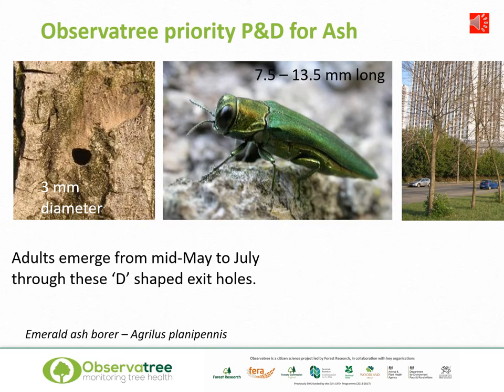The emerald ash borer is a threat to our ash trees, many of which are already suffering from Chalara ash dieback. The pest is from eastern Asia but has established outside its native range in the United States and Canada, resulting in large losses of ash trees. Its range is increasing, spreading westerly across Eurasia, meaning it is getting closer to the UK. The larvae cause damage by feeding inside the tree, disrupting its vital water and nutrient transport systems. Symptoms include leaf loss, dying branches, epicormic shoot growth, and larval galleries under the bark. When adults leave the tree they produce D-shaped exit holes. An infestation is usually fatal and can be quite rapid — small trees can die within a year.